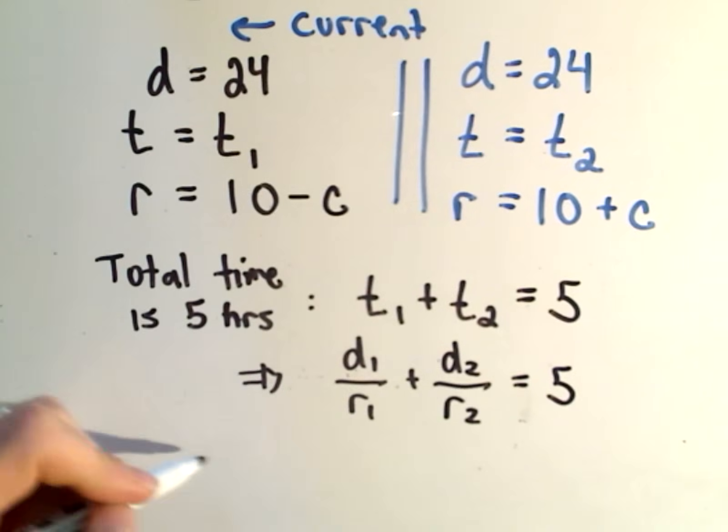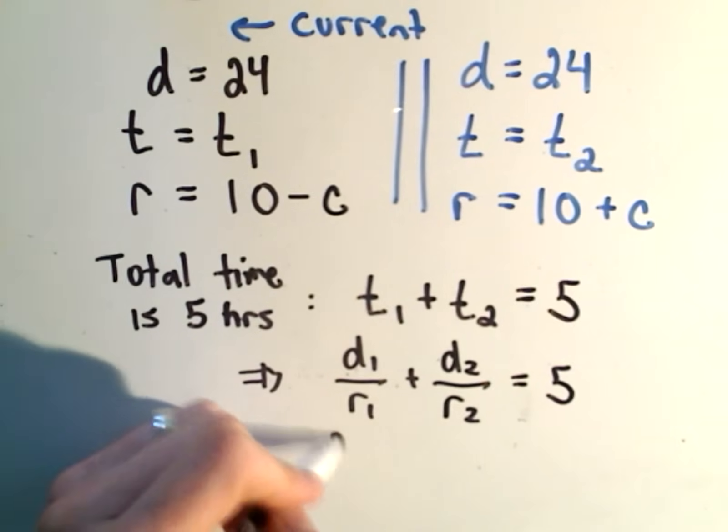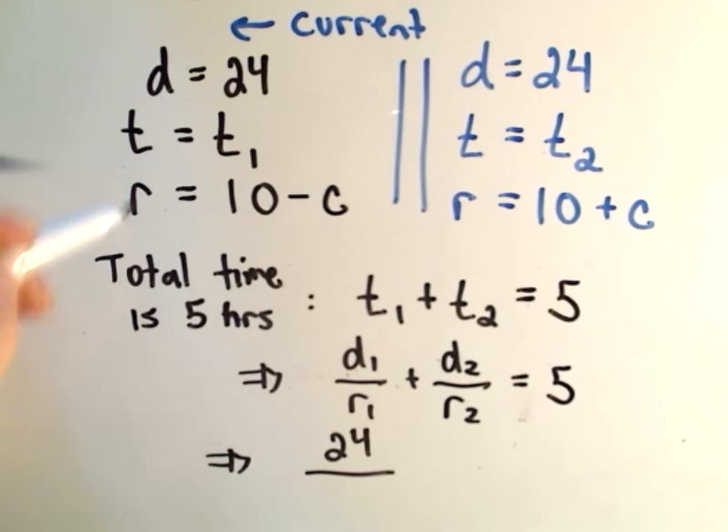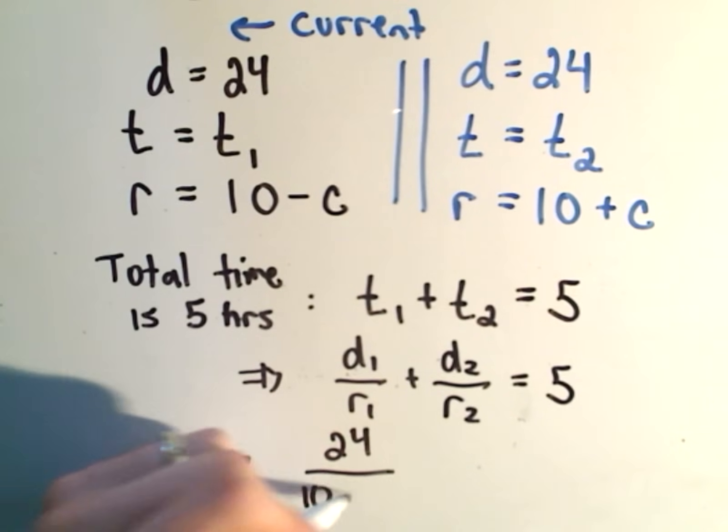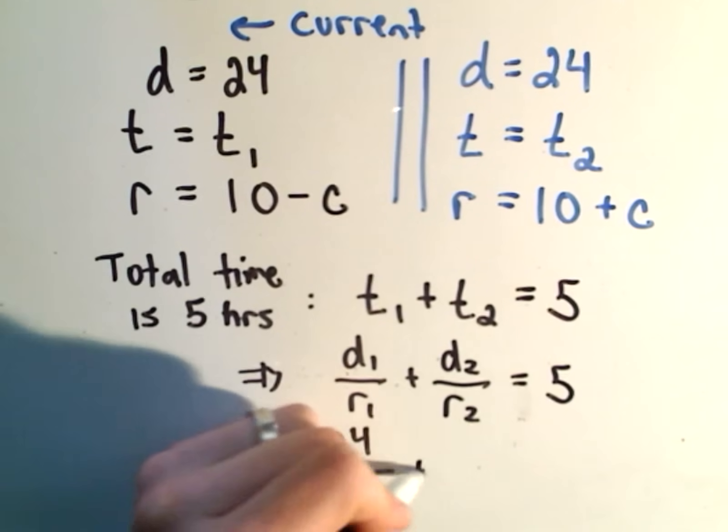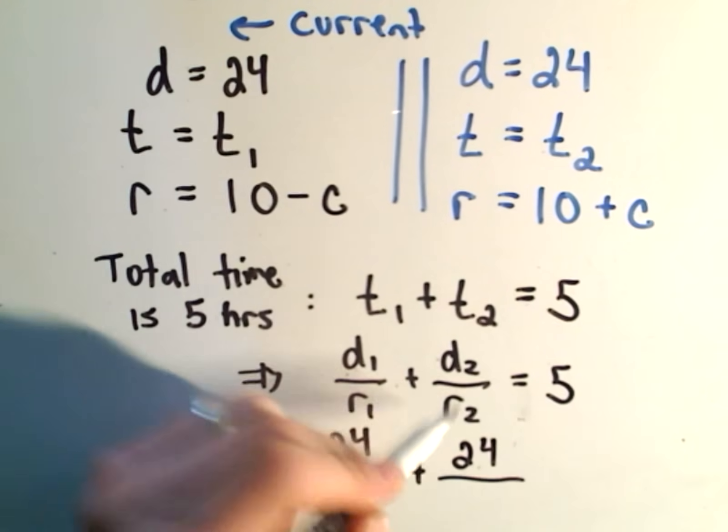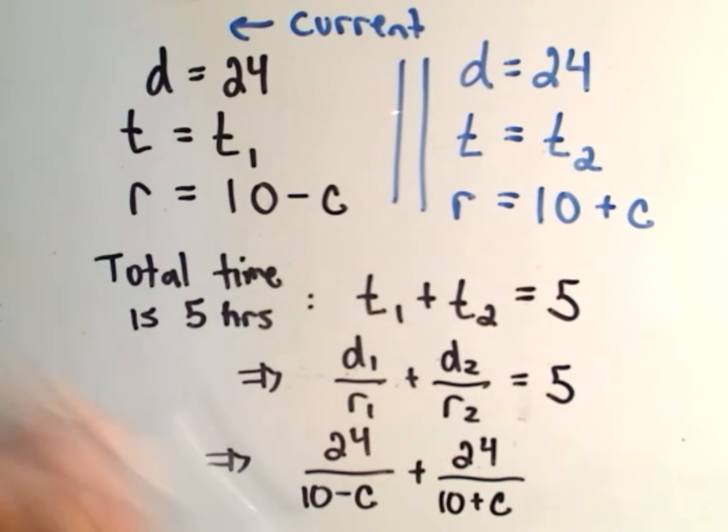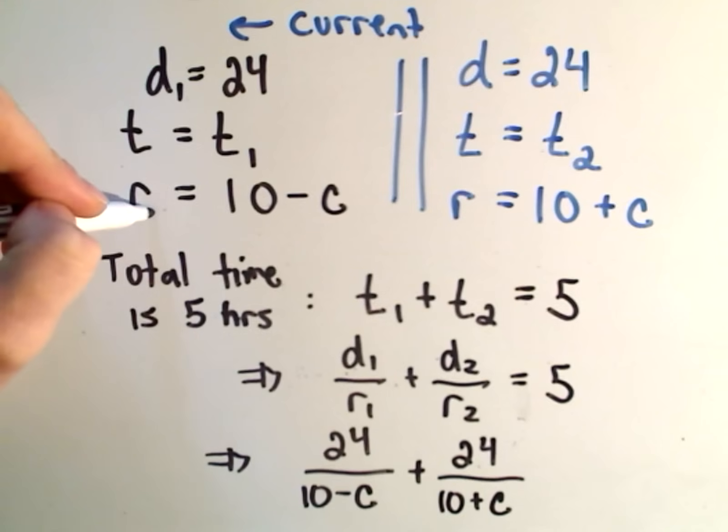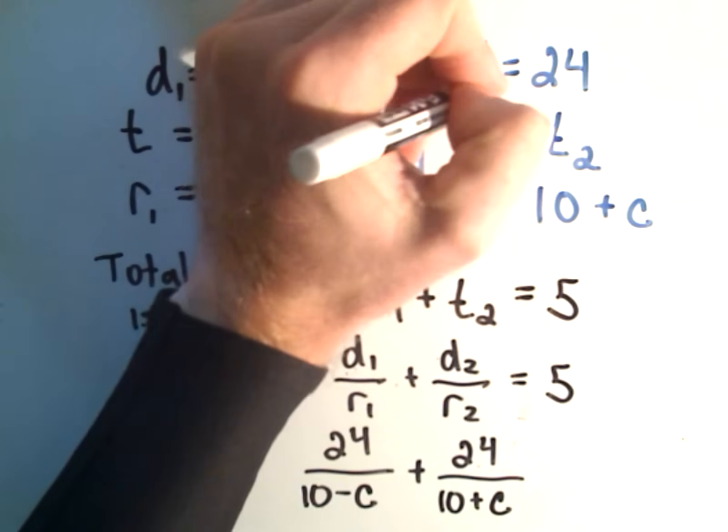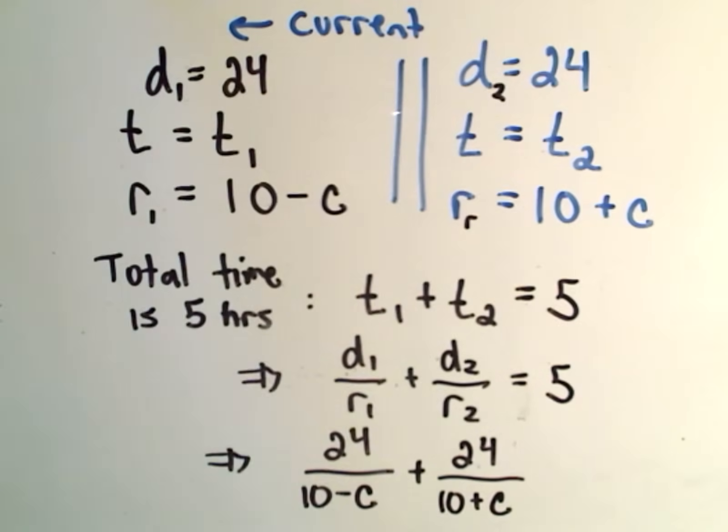we know that the first distance was 24. The rate over that part was 10 minus C. The distance over the second part was also 24. The rate over the second part was 10 plus C. Okay, so I can even call this D1, R1, D2,